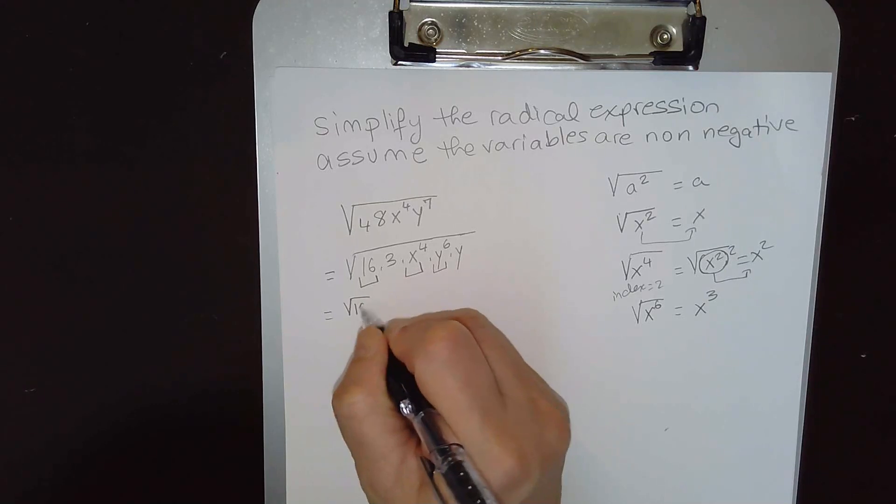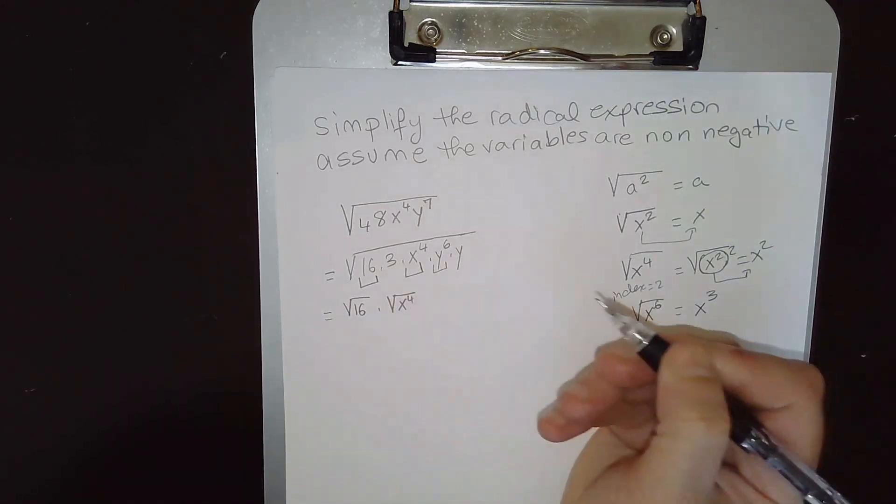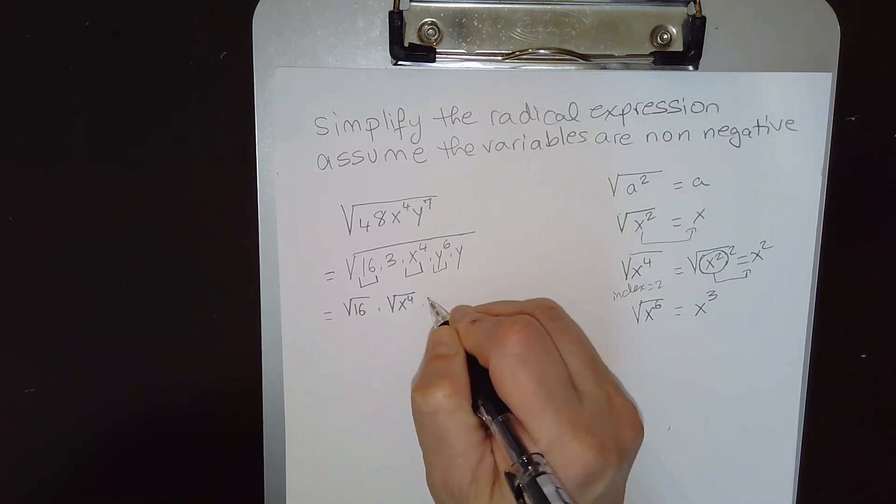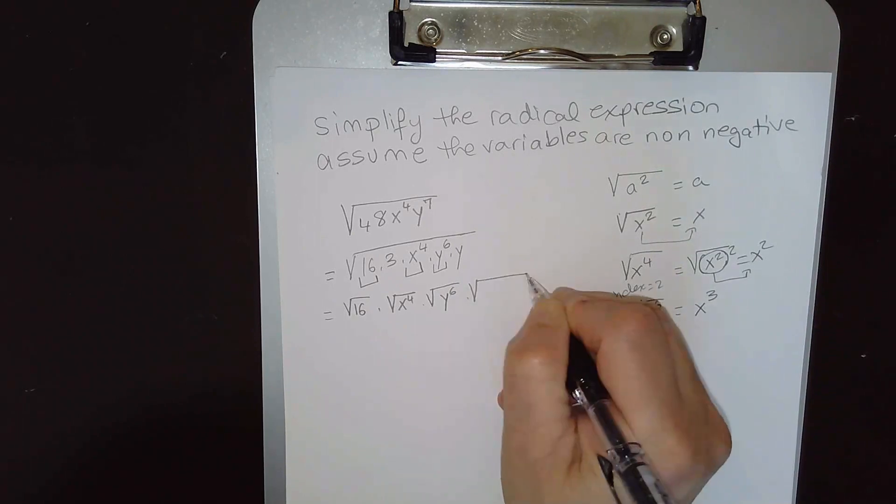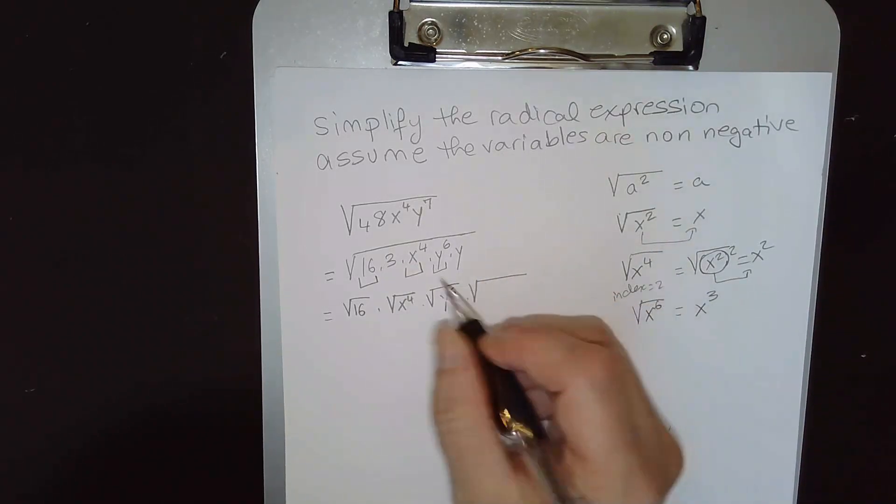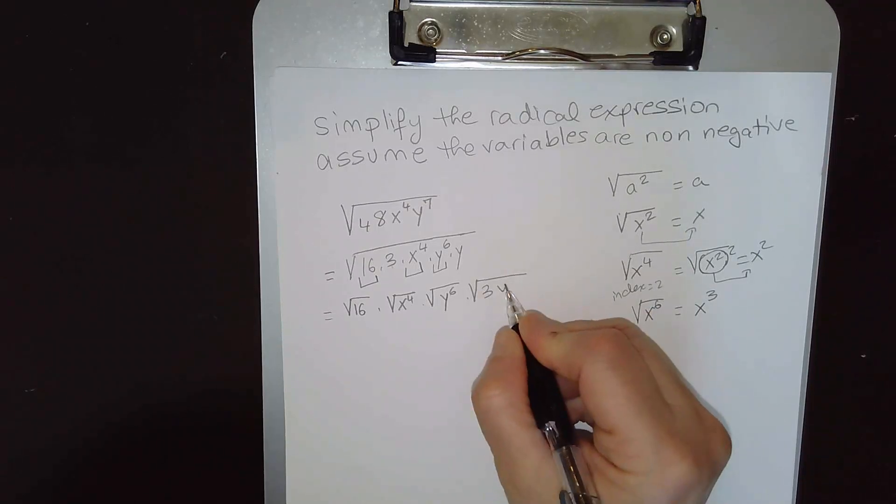So square root of 16 times square root of x⁴, separate them in different radicals, times square root of y⁶, and everything else would be in another radical. So 3y, these will not come out.